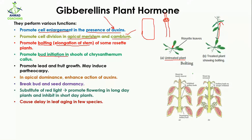Gibberellin promotes the initiation of shoots in chrysanthemum callus, increasing bud formation. It also promotes fruit growth and may induce parthenocarpy. Parthenocarpy is a process in which fruit is developed without fertilization — meaning male and female gametes are not fused together, yet fruit development takes place.